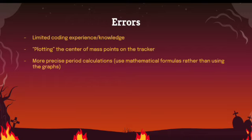Errors: My limited coding experience has restricted the accuracy of the experiment. Another error could have been the plotting of center of mass on the tracker—you have to shift and click the different points, and sometimes your hand can shake. A more precise method would lead to more accurate results. And finally, instead of calculating the period by looking at the graph, you could find the actual mathematical quantities and plug them into the formula.